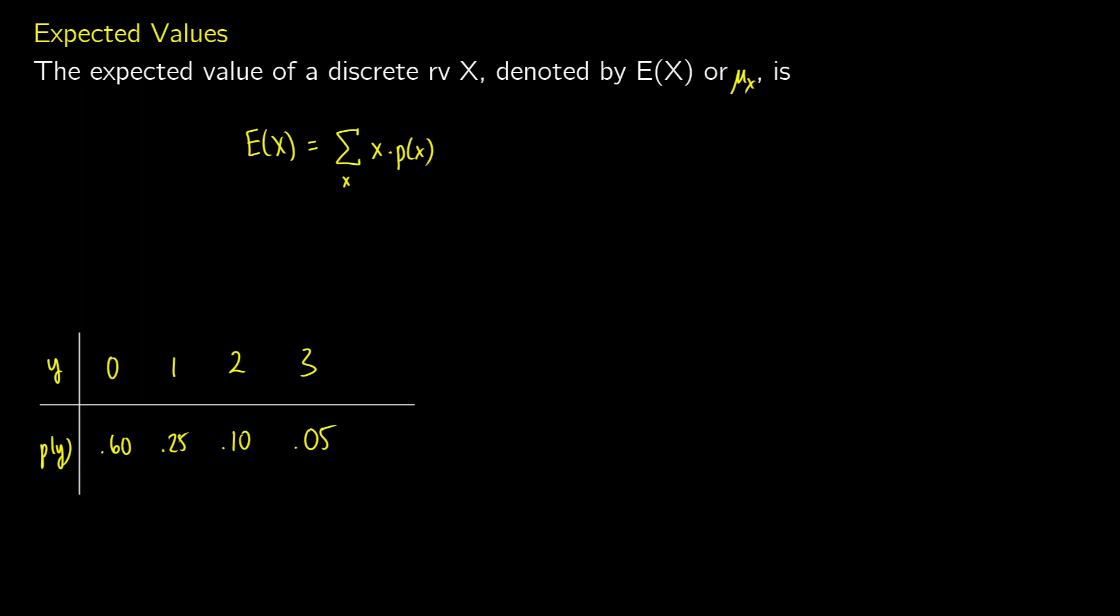And this is given by the formula of the sum of x, so the value that you'd be rolling on a die, a value you'd be observing, times the probability of that value.